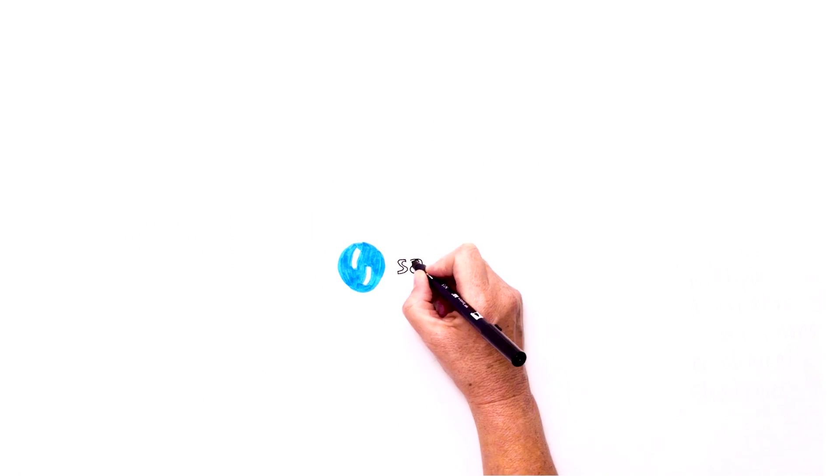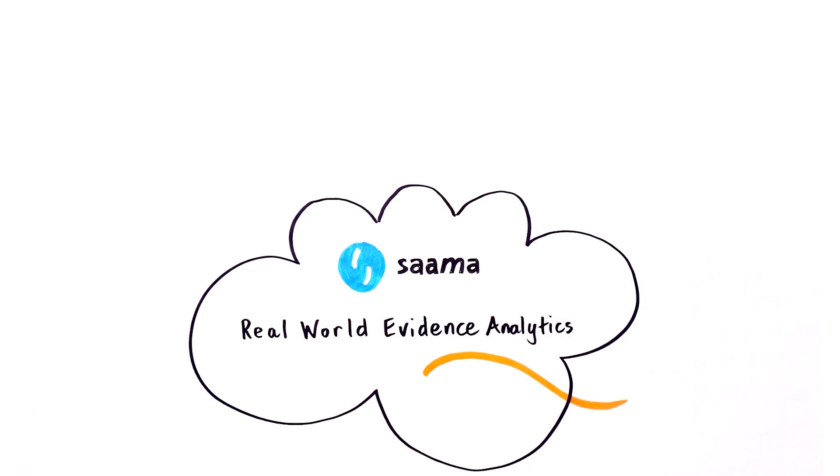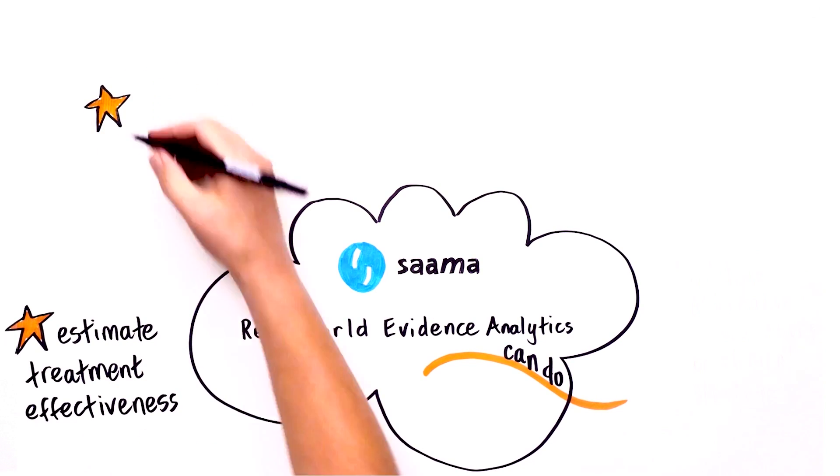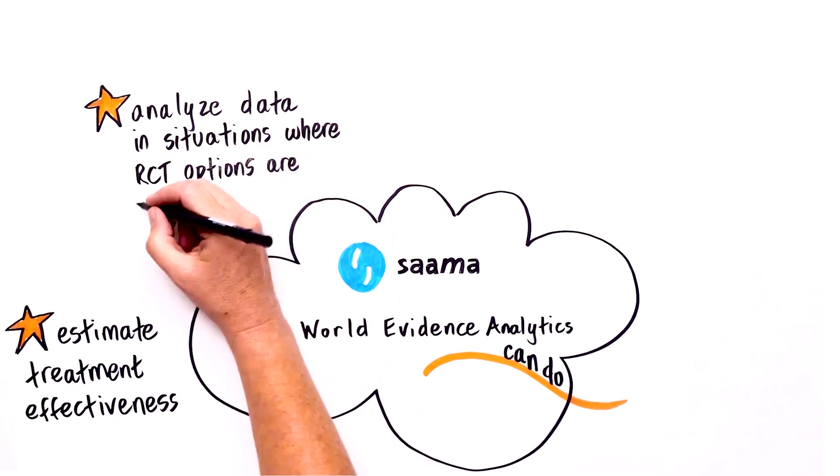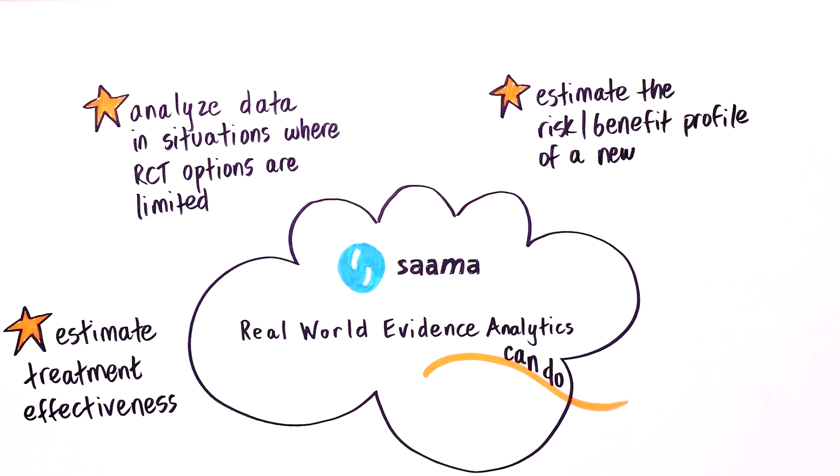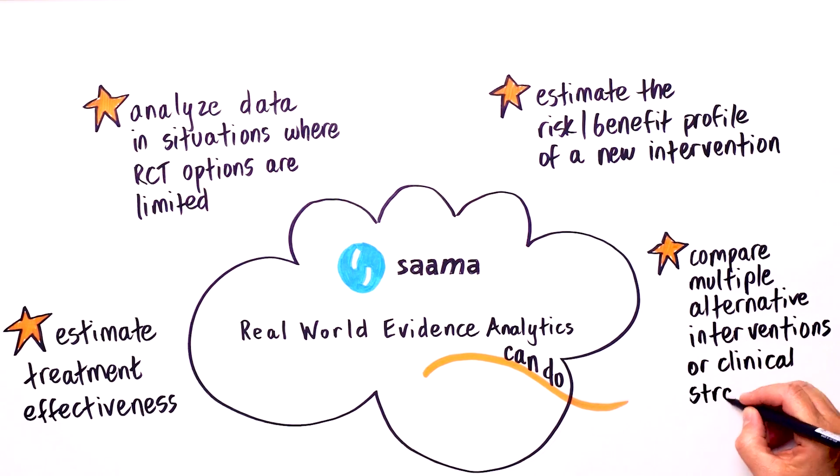So what can SAMA's real-world evidence analytics do? Estimate the treatment effectiveness in a variety of healthcare settings. Analyze data in situations where RCT options are limited. Estimate the evolving risk-benefit profile of a new intervention, including the long-term clinical benefits and risks. Compare multiple alternative interventions or clinical strategies to inform optimal therapy choices beyond placebo comparators.